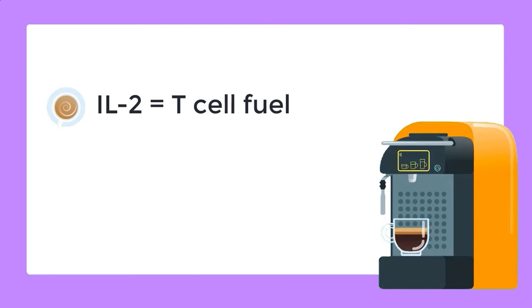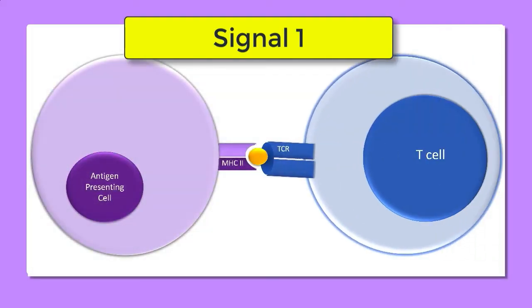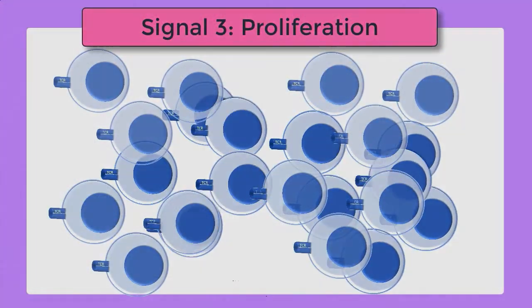Interleukin-2 is to T-cells what cups of coffee are to me. Following antigen presentation, also known as signal 1, the next step is signal 2, which is also known as co-stimulation and results in the production of interleukin-2 and its receptor. So the T-cells make interleukin-2 and then consume interleukin-2 in order to proliferate into an army of T-cells.